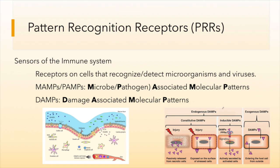Endogenous DAMPs are things like molecules released by necrotic cells, cellular debris from injury, and signals sent out by a cell that is infected by an intracellular microorganism or virus.